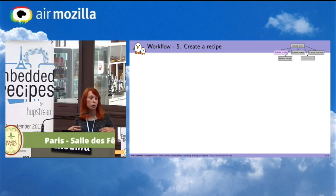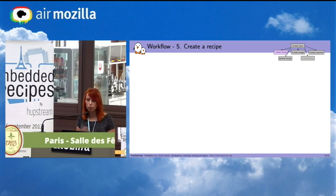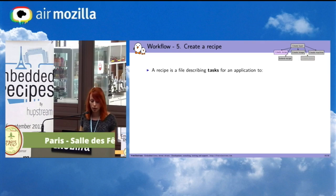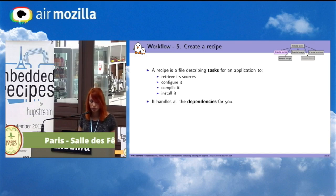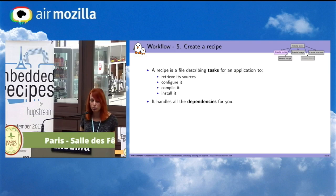Now we will see how to create a recipe to compile our custom application. A recipe is a file that describes tasks for an application: to retrieve its sources, configure it, compile it, and install it. It also handles all the dependencies for you.